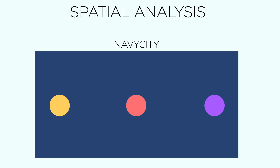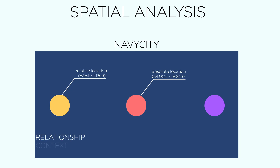Within spatial analysis, there's a concept called absolute location — a description of location based on exact coordinates. Think of it this way: red's location is absolute, and there's no disputing exactly where he is. Then there's relative location, which is the description of location based on another object or in reference to another object — in this case, it would be west of red. We utilize relative location over absolute location when you want to analyze the relationship, context, or dynamic of two things.